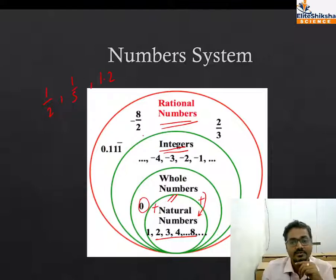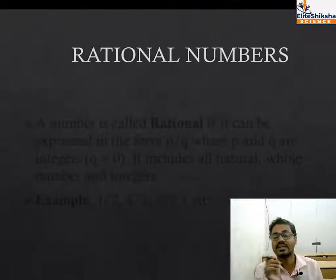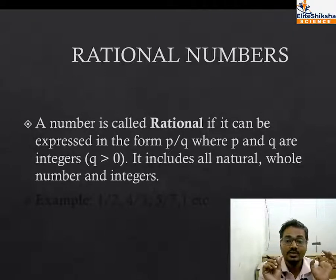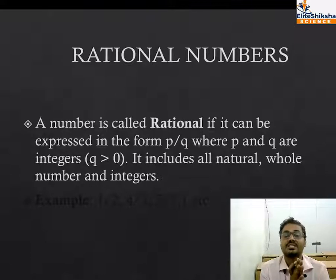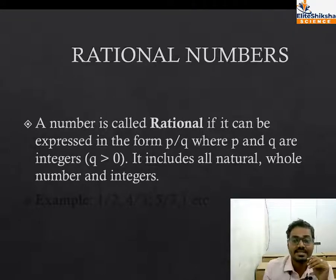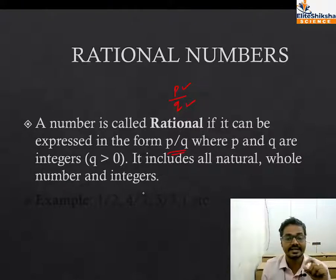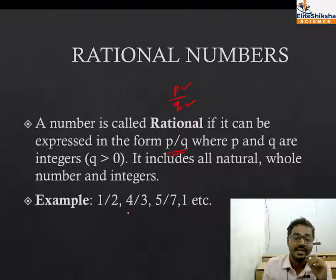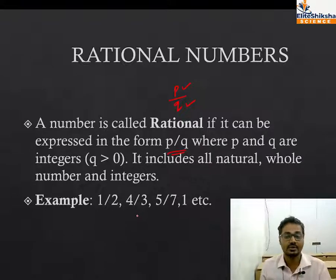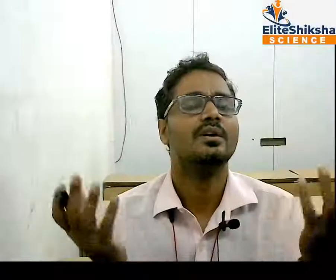We will give the definition of rational numbers. A number is called rational if it can be expressed in the form p/q, where p is any positive or negative number and q is only a positive number. It includes all natural, whole numbers, and integers. So you can say 1 by 2, 4 by 3, 5 by 7, or 1 - these are all rational numbers. Very clear, right?